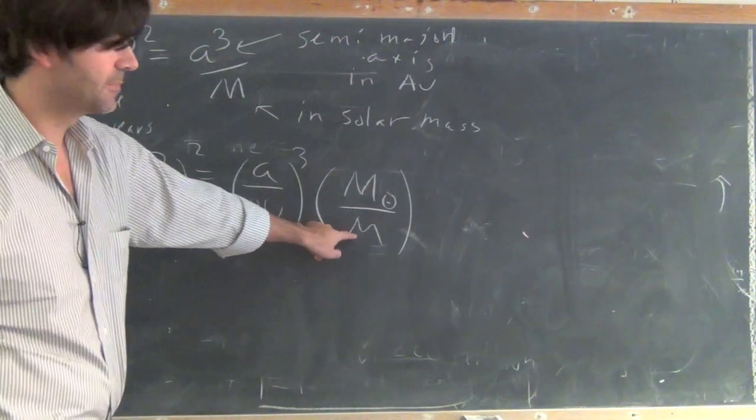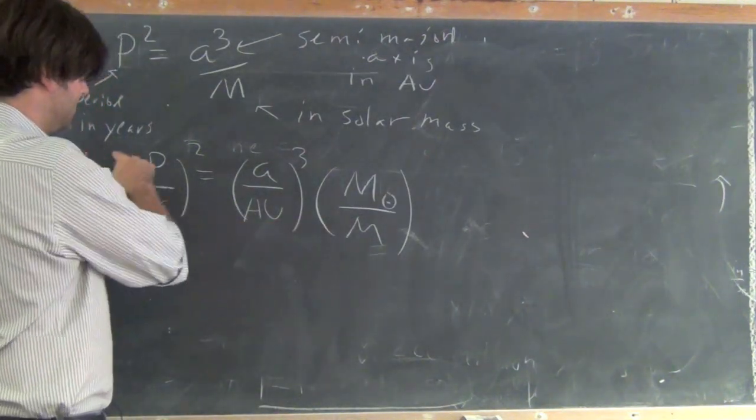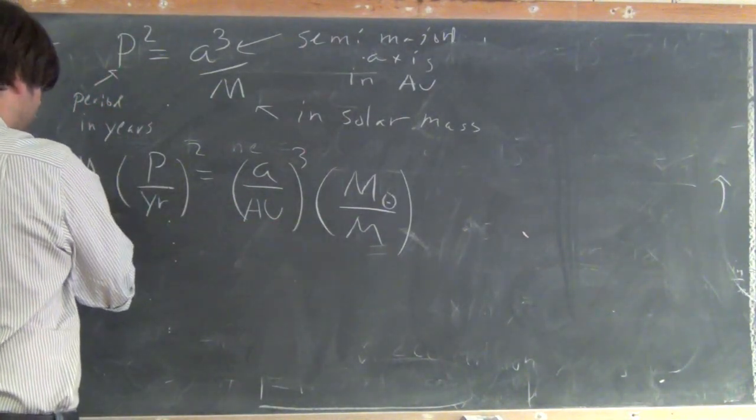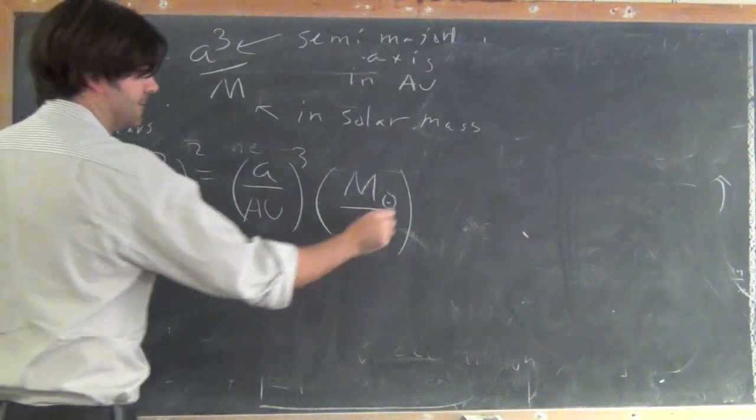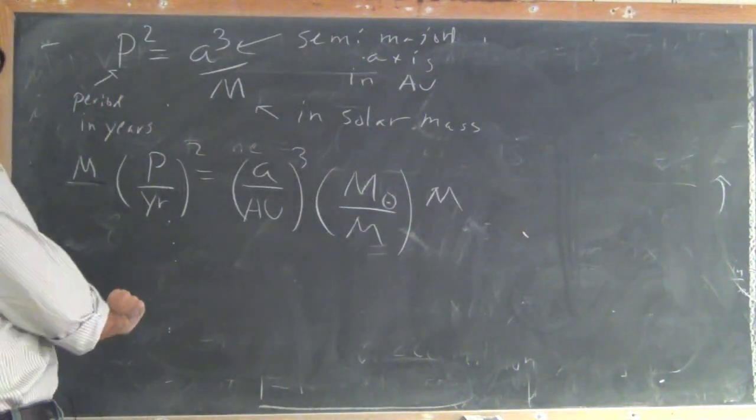We want to find this mass. What we can do is multiply both sides by mass and divide both sides by period squared.